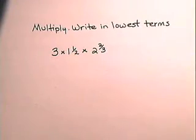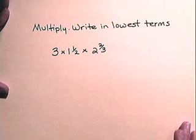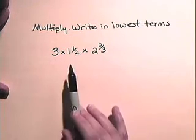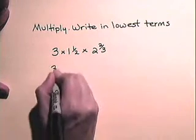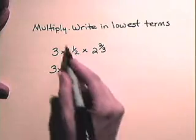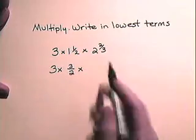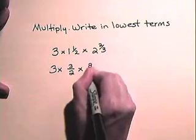Now let's look at an example of multiplying mixed numbers. Let's multiply 3 times 1 and 1/2 times 2 and 2/3, and we will write our answer in lowest terms. Whenever we are multiplying mixed numbers, we need to change the mixed numbers to improper fractions before we multiply. So 1 and 1/2 as an improper fraction is 3/2, and 2 and 2/3 as an improper fraction is 8/3.